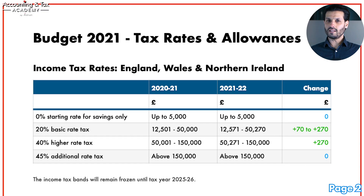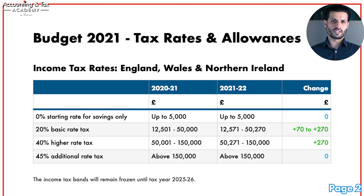Let's begin with income tax rates and thresholds on page two of our handout. Income tax applies to your employed earnings — that is pay as you earn — and if you are a self-employed sole trader or partnership, on your taxable profits. Income tax rates differ from dividend tax rates, which we'll cover later on.